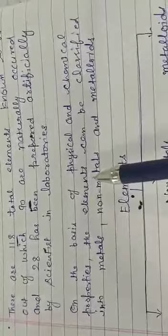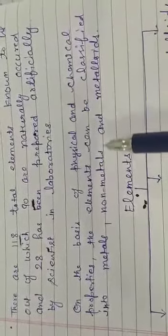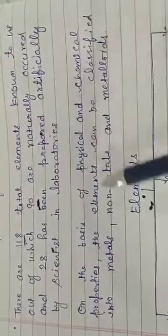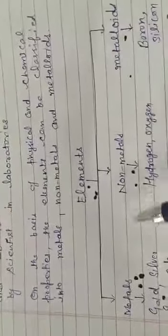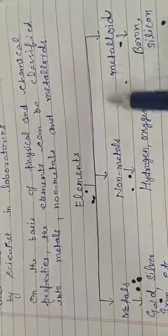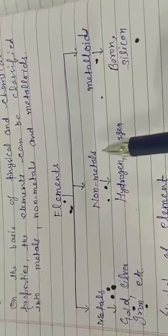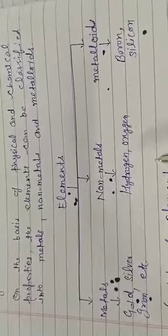On the basis of physical and chemical properties, elements can be classified into metals, non-metals, and metalloids. Examples of metals are gold, silver, and iron. Non-metals include hydrogen and oxygen. Metalloids include boron and silicon. Out of the 118 elements, the majority are metals.